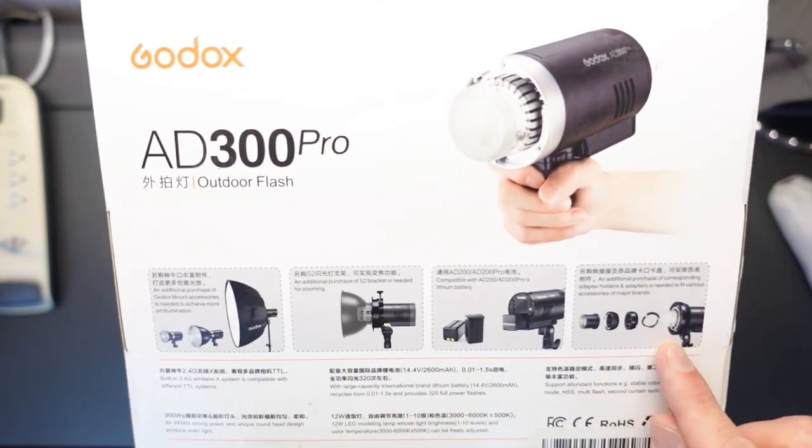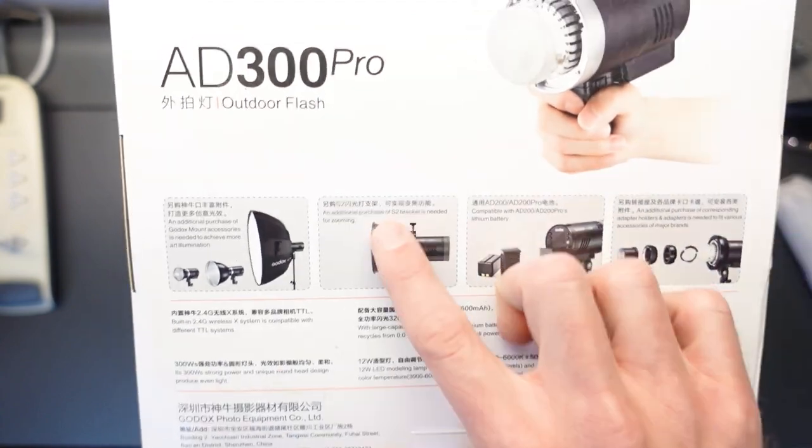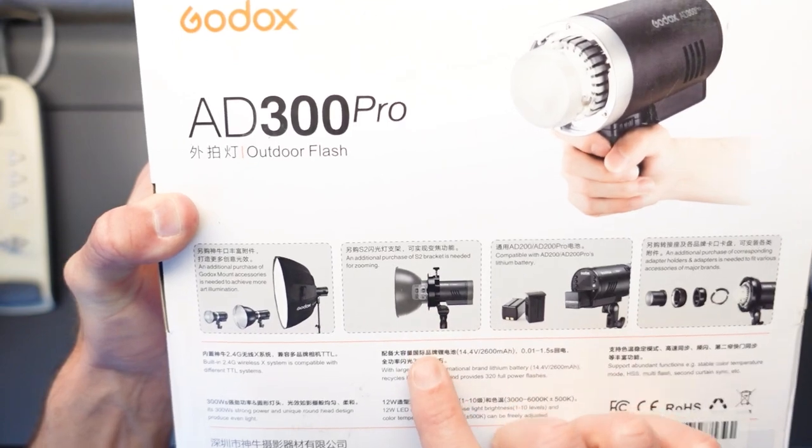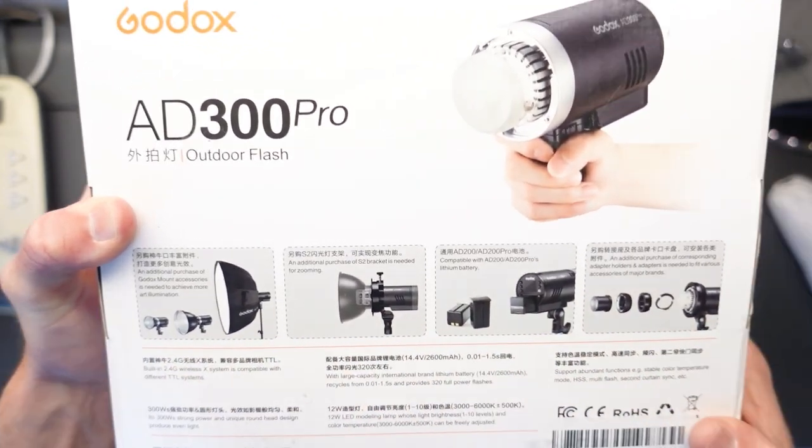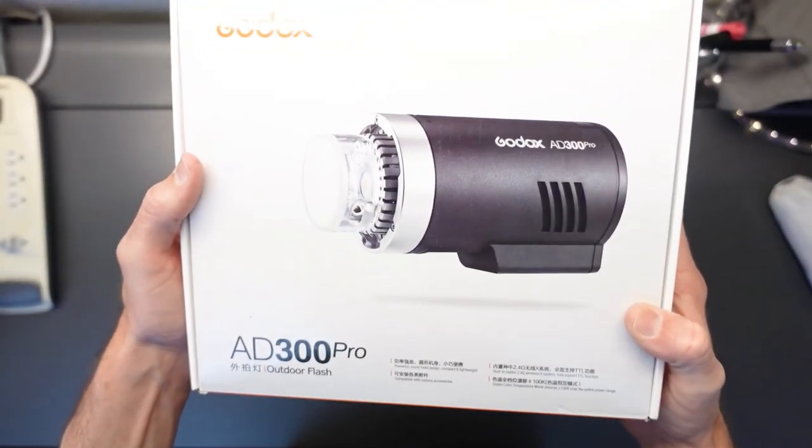These are specific to the AD300. This piece here, this item, is an additional S2 bracket that I have an example I can show you a little bit later in the video, but it works on the AD200 as well. These are some other things that you can purchase separately for use with your AD300.